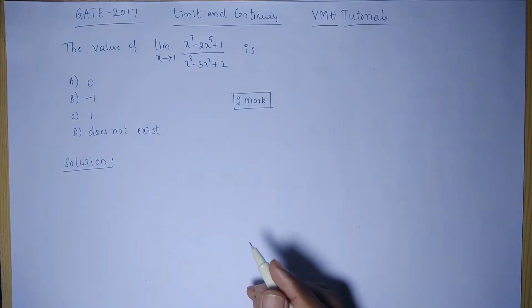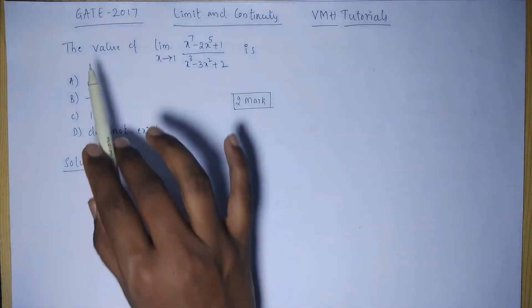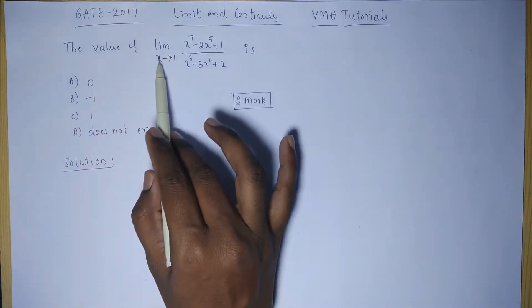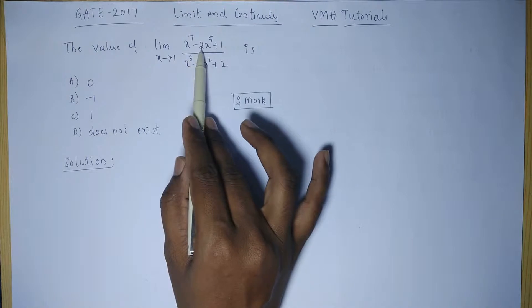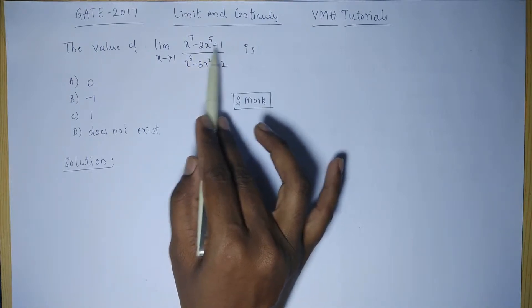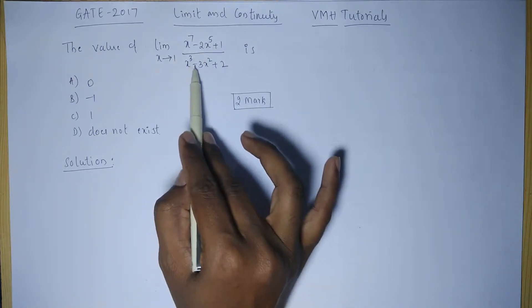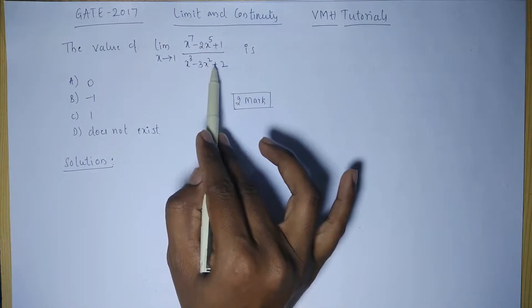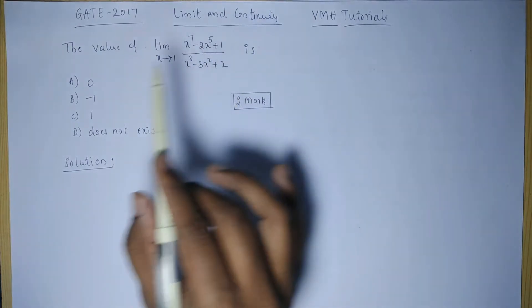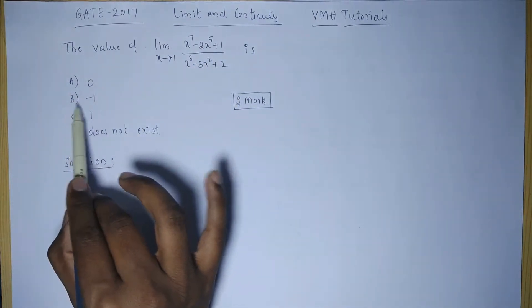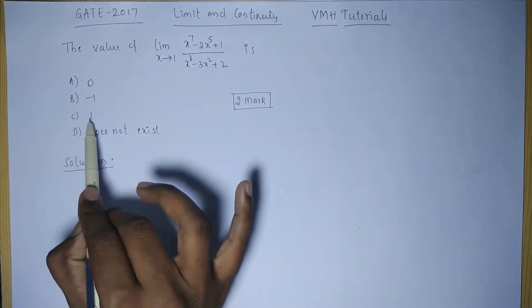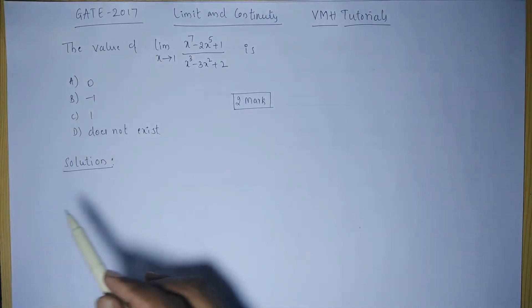Hello, today we will solve a problem on limit and continuity which was asked in GATE 2017 for two marks. The value of limit as x tends to 1 of (x^7 - 2x^5 + 1) divided by (x^3 - 3x^2 + 2) is: (a) 0, (b) -1, (c) 1, (d) does not exist.